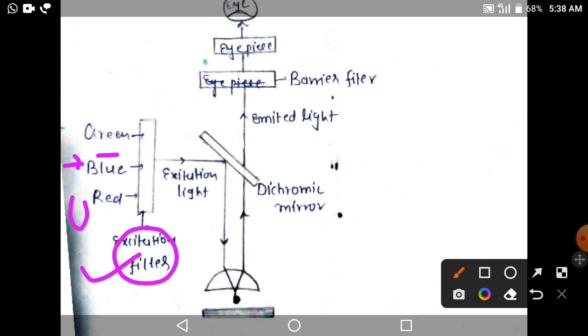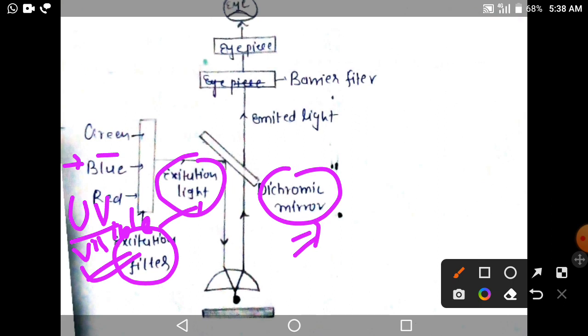Here we are using UV visible light, so the UV visible light is the excitation light. The dichromic mirror reflects this light onto the specimen.